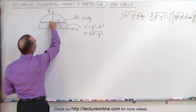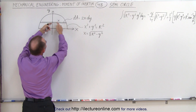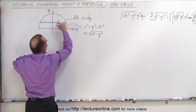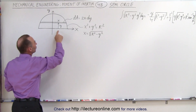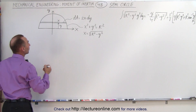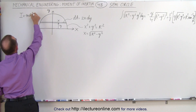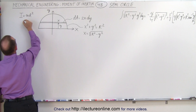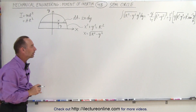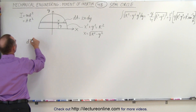The small area element is going to be equal to the length times the width. The length is going to be twice x — the distance from the y-axis to the circle — times the width, which is a small dy. The distance to the little strip is going to be y. We know that the moment of inertia by definition is equal to mr² or ar², depending upon whether we use mass or area. In this case we'll use area.